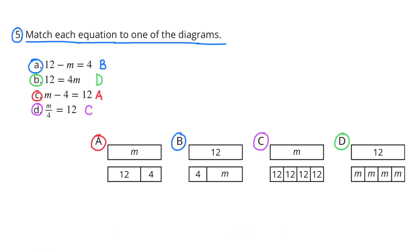Problem 5: Match each equation to one of the diagrams. I matched A — 12 minus m equals 4 — with diagram B, because 4 plus m equals 12, which also means 12 minus m equals 4. I matched B — 12 equals 4m — with diagram D, because 4 m's added up equals 12. I matched C — m minus 4 equals 12 — with diagram A, because the diagram shows that 12 plus 4 is the same length as m, so m minus 4 equals 12. D: m over 4 equals 12, or m divided by 4 equals 12.